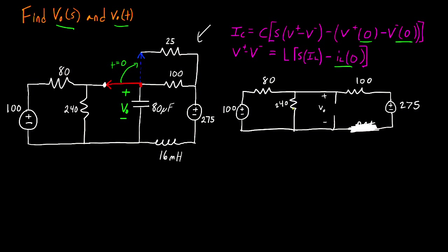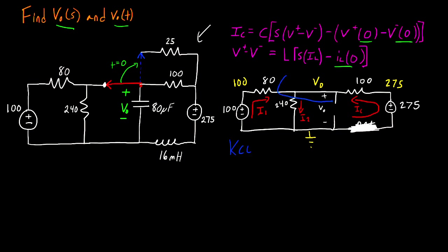The first thing I'm going to do is label my component currents. I can call this I1, this I2 — this is going to be one continuous current because there's nowhere for it to branch off — and I can call this I_L because that's the current going through my inductor. My next step is to label my node voltages. I'll start with my ground node; this node is 100 volts referenced to ground, and 275 over here. V_o is referenced to ground as well, so I can call this node V_o. The next step is to write KCL.